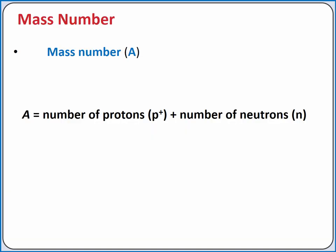Remember that most of the atom's mass is found in the nucleus, which is composed of protons and neutrons. The electrons are much, much smaller. So the mass number for an atom is the sum of the protons and neutrons in the atom, and is a rough estimate of the atom's mass.